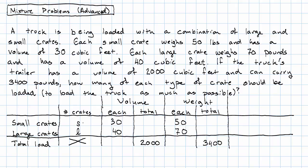But there won't be an equation with S plus L. Rather, we'll have one equation describing the volumes of the crates. If I have S crates with a volume of 30 each, my total volume will be 30S in small crates. If I have L large crates with 40 volume each, the total volume of my large crates will be 40L.